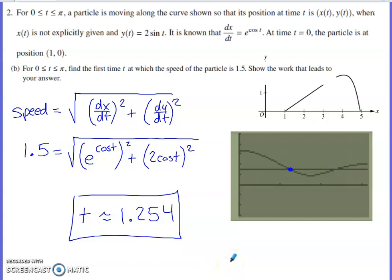Part B says for the interval zero to pi, find the first time when the speed of the particle is 1.5. Show the work that leads to your answer. When you deal with parametric equations, the speed is going to be the magnitude of the velocity vector, and that's going to be a Pythagorean theorem style calculation.